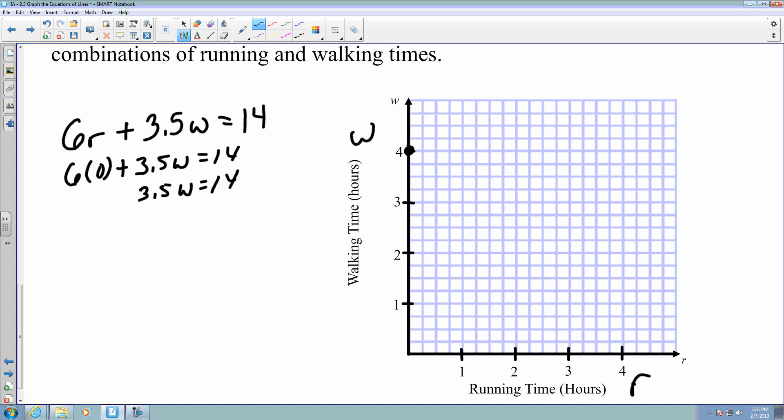Next, I want to find out what my time would be if I ran the entire thing. So if I ran the entire thing, that means I walked 0 hours. And so then all I'm going to do here is take 14 divided by 6, and that's somewhere around 2.3. So that's what I would say is somewhere right around here. So I have two points, which gives me the capabilities to make a line.